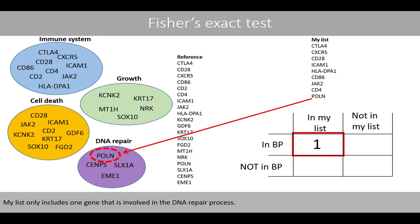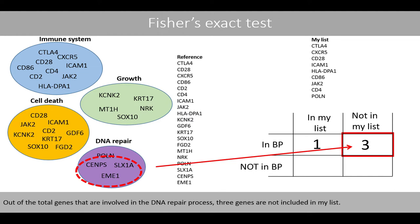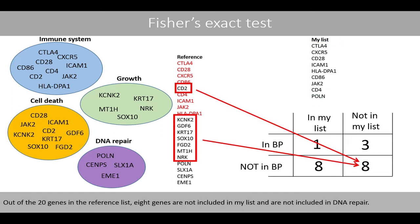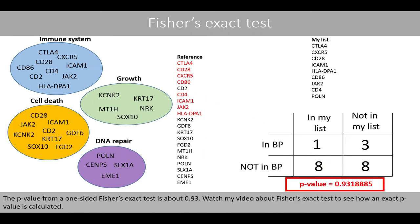My list only includes one gene that is involved in the DNA repair system, since only about 11% of my genes are involved in DNA repair, whereas 20% of the genes in our reference list are involved in DNA repair. This shows that my list is not enriched with DNA repair genes. My list only includes one gene that is involved in the DNA repair process. Out of the total genes involved in DNA repair, three genes are not included in my list. Eight of the genes in my list are not involved in DNA repair. Out of the 20 genes in the reference list, eight genes are not included in my list and are not included in DNA repair. The p-value from a one-sided Fisher's exact test is about 0.93.